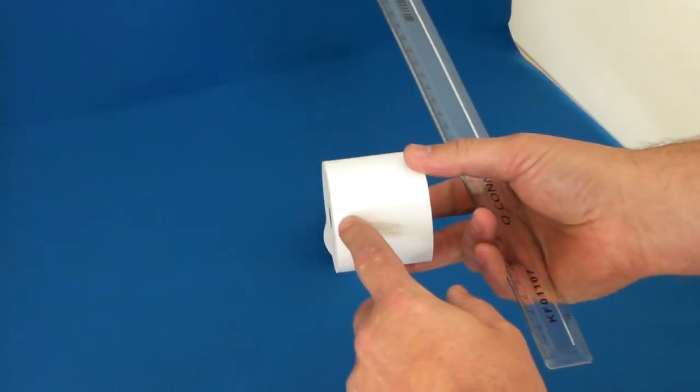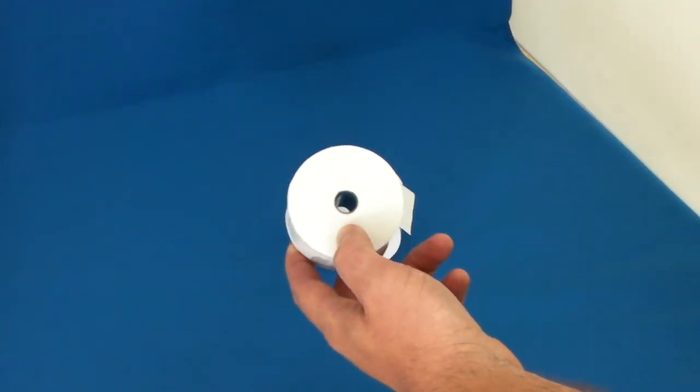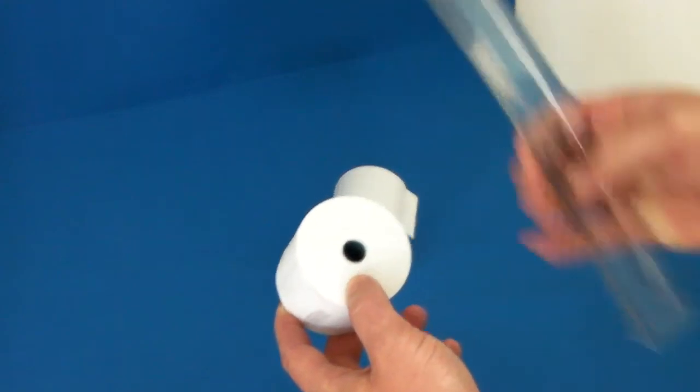This means that this roll is 57 by 70. The third dimension, often given on a box, is just the core size.